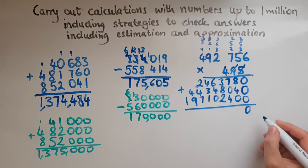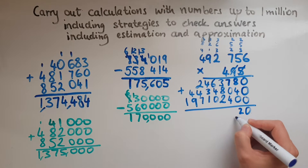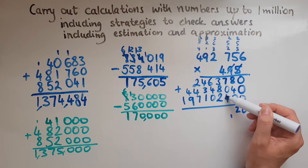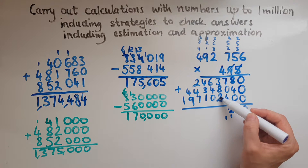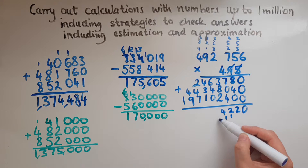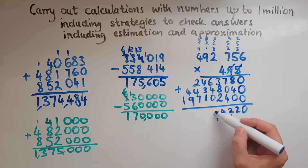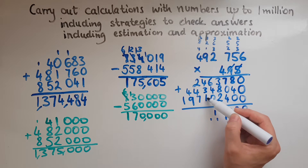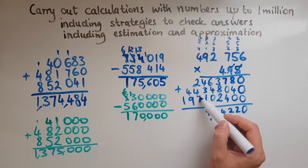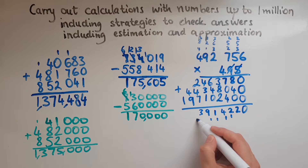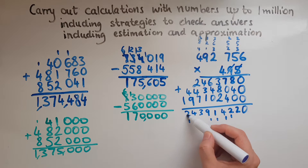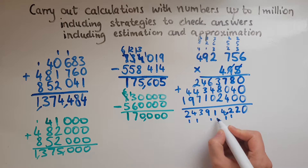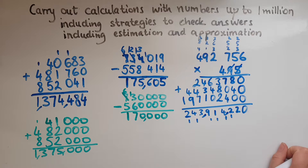So we've got all of these rows and we'll now add them up. 0. 8 and 4 is 12 — so 2 down and 1 carried over. 7 and 4 is 11 and 1 is 12. 8 and 2 is 10, 13 and 1 is 14. 6 and 4 is 10 and the 1 is 11. Then 7, 7, 8, 9. 11, 13. 9 and 1 is 10 and the 4 is 14. 1 and 1 is 2. So the answer is 243,914,220.